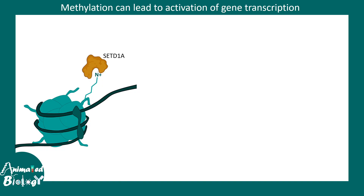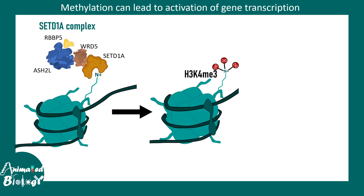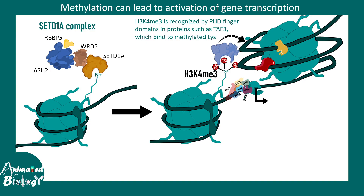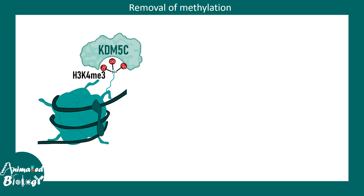Specific proteins such as SETD1A, along with several partners known as the SETD1 complex, can lead to trimethylation of H3K4. This trimethylation can be recognized by the PHD finger domain-containing protein TAF3, which binds to methylated lysine via its chromodomain, and the consequence is activation of gene transcription. However, this is not universal — sometimes H3K4 trimethylation is recognized by KDM5C, and this modification is removed, leading to different consequences.